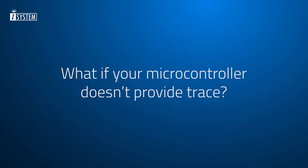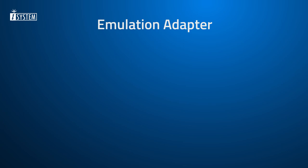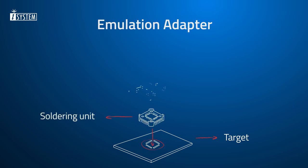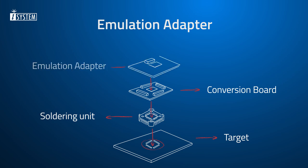If your particular microcontroller doesn't provide trace, don't worry. If a superset device that features trace exists for your microcontroller, we offer a special solution we call an emulation adapter. The original microcontroller on the target circuit board is replaced with a soldering unit. A conversion board is connected on top of the soldering unit, and the emulation adapter is then plugged on top. The emulation adapter uses the superset device to emulate the original microcontroller while also exposing the trace interface to the debugger. You just connect it to the blue box, and you're ready for tracing!